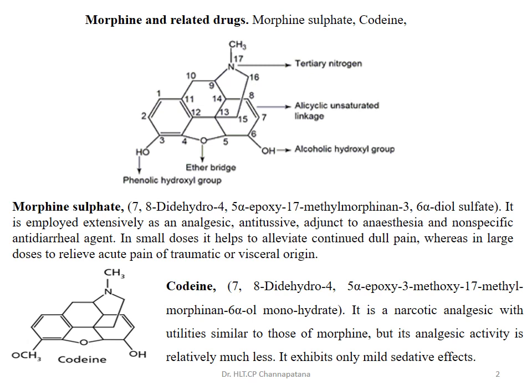There is a double bond at the 7 and 8 positions. At the 17th position, a methyl group is attached to the nitrogen, which is a tertiary nitrogen. In the third position, a hydroxyl group is present, and in the sixth position, also one hydroxyl group is present — so there are totally two hydroxyl groups. The hydroxyl group at the third position is a phenolic hydroxyl group, and the one at the sixth position is an alcoholic hydroxyl group.